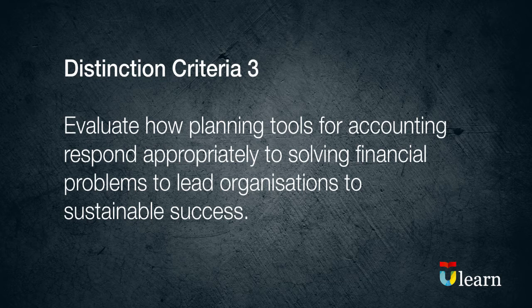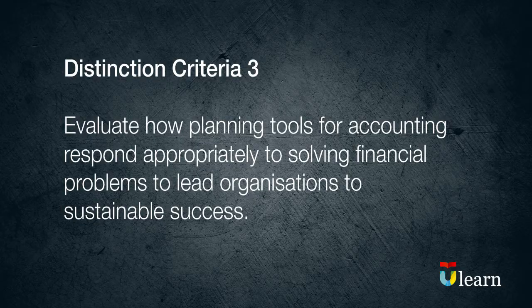Distinction Criteria 3 asks you to evaluate how planning tools for accounting respond appropriately to solving financial problems to lead organisations to sustainable success. Here you need to evaluate how planning tools, for example capital and operating budgets, respond appropriately to solve financial problems that can help an organisation achieve sustainable success.